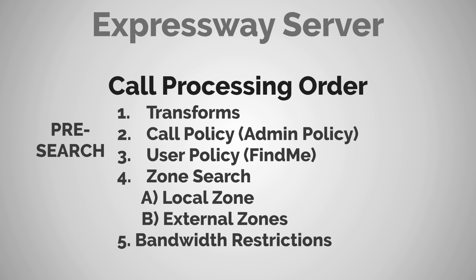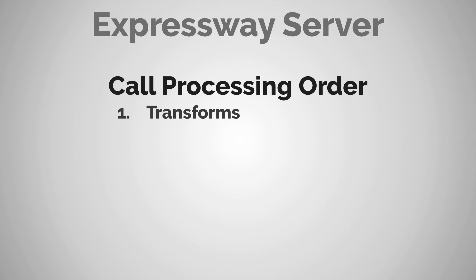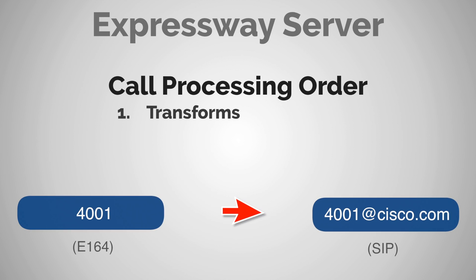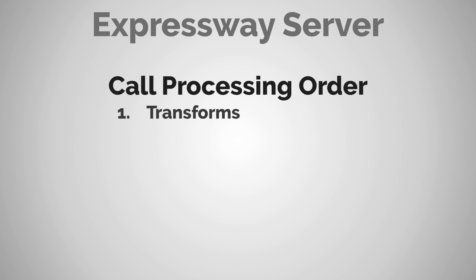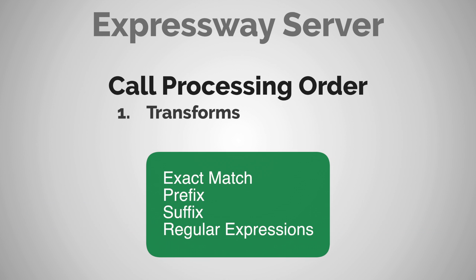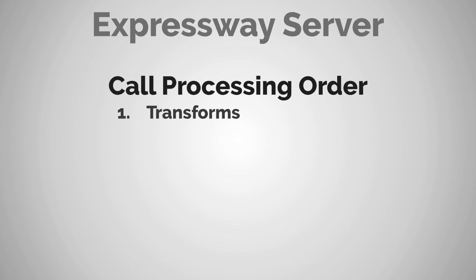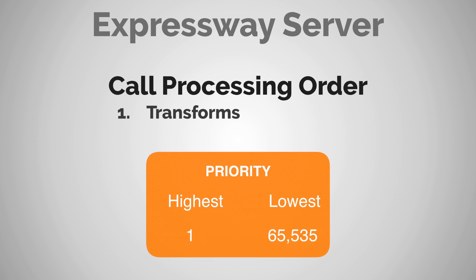This whole process gets pretty intricate, so today we're focusing on transforms under the pre-search components. Transforms do what they sound like — they take an alias of one type and change it into another. Like many things on the Expressway, transforms can use an exact match, a prefix, a suffix, or regular expressions. Most commonly, regular expressions are used because they allow very granular control. Transforms are also searched by priority, ranging from 1 to 65,535, where 1 is the highest priority.